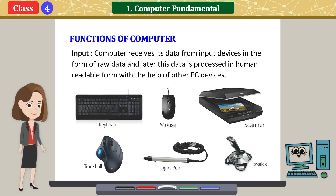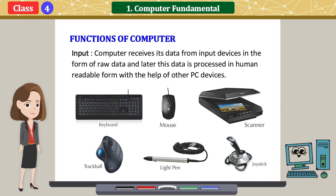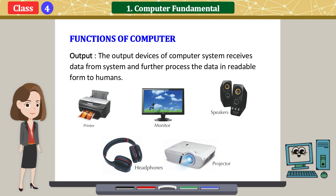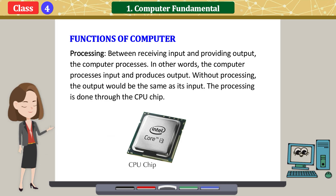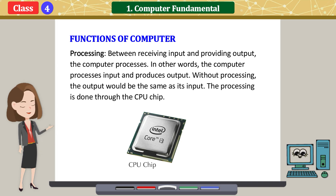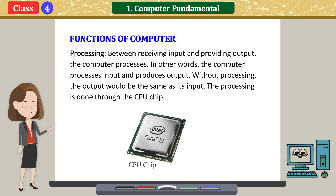Functions of computer — Input: a computer receives its data from input devices in the form of raw data, and later this data is processed into human-readable form with the help of other PC devices. Output: the output devices of a computer system receive data from the system and further process the data into readable form for humans. Processing: between receiving input and providing output, the computer processes. In other words, the computer processes input and produces output. Without processing, the output would be the same as its input. The processing is done through the CPU chip.